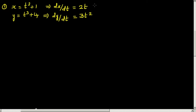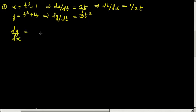So this implies dt/dx — let me write that, as it's going to be useful later. dt/dx is just the reciprocal of dx/dt, so the reciprocal of 2t is 1 over 2t. Now we can say dy/dx is equal to dy/dt divided by dx/dt, or equivalently written as dy/dt times dt/dx.